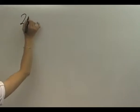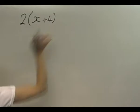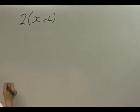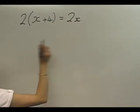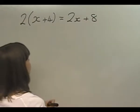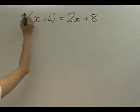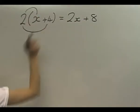2 bracket x add 4, close bracket. Now what that means is 2 times everything inside the brackets. So 2 times x is 2x and 2 times 4 is 8. Just to emphasize, it's 2 lots of x making 2x and 2 lots of 4 making 8.